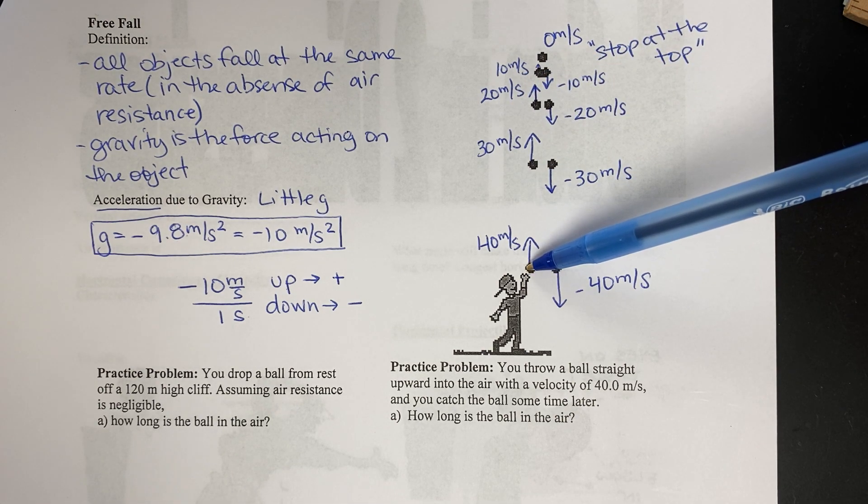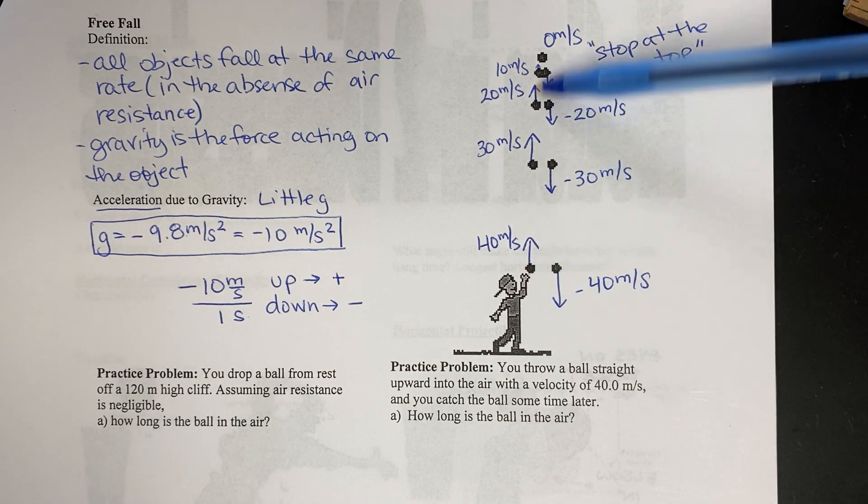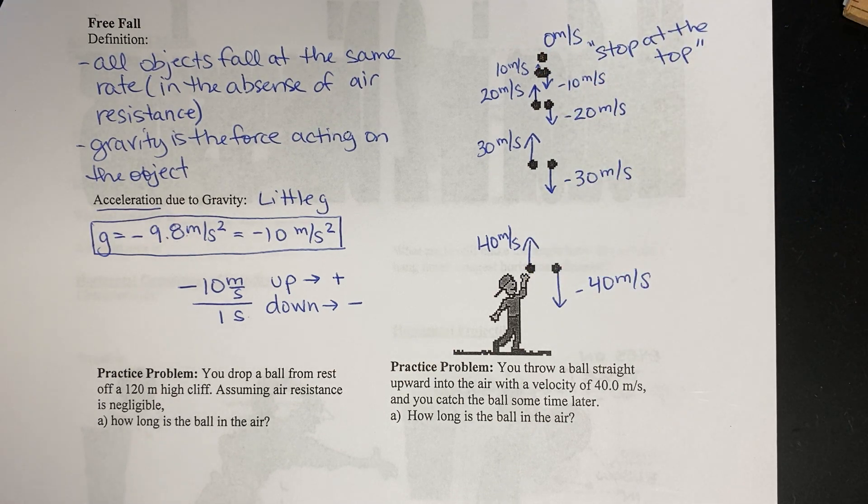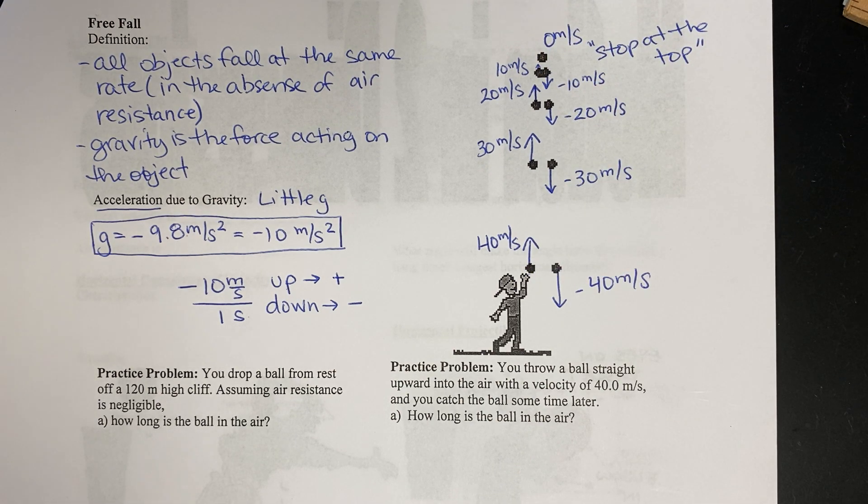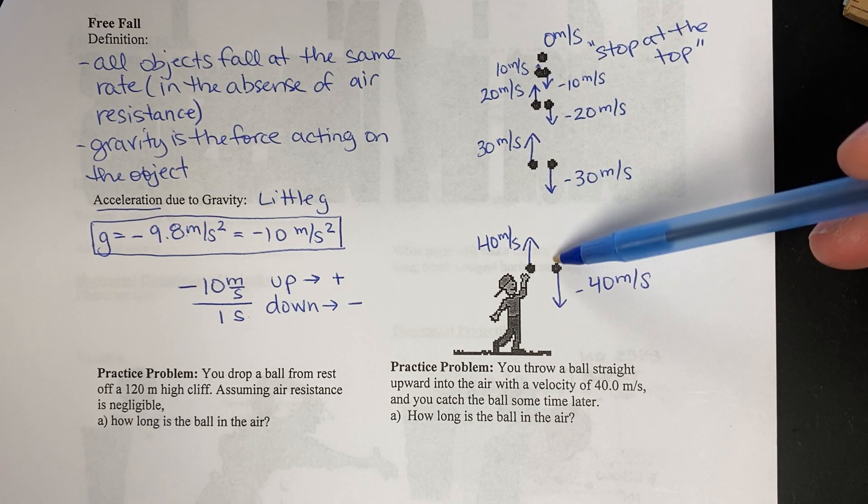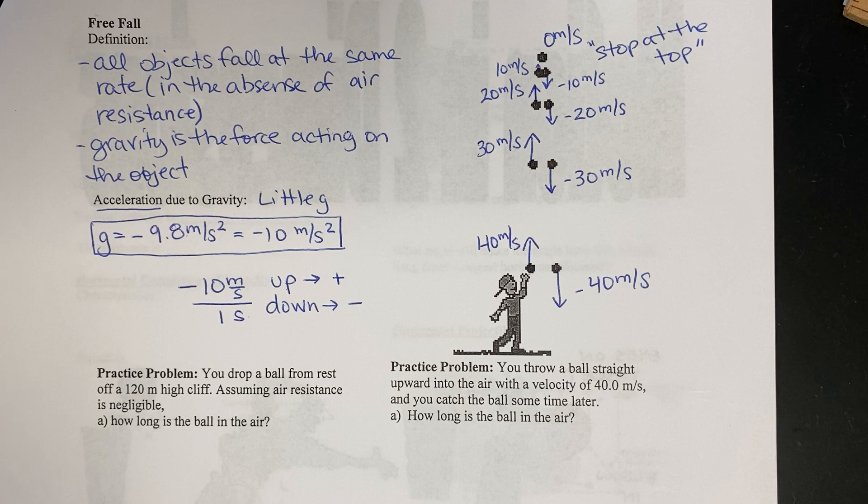So if you take a gun and shoot it up, would it be a good idea to catch the bullet? I'm hoping you say no, because the speed that it goes up at is the same as the speed that it comes down at. So it would be going really, really fast. So that would not be a good idea.